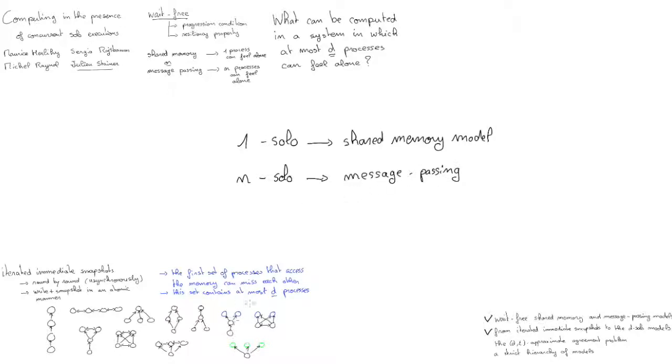So the question now is, are the new models, the new DSOLO models equivalent to one of the extreme models, shared memory or message passing? Or are they forming a hierarchy spanning from message passing to shared memory? For that, we are going to consider a problem that we define to match exactly the computation power of a DSOLO model.